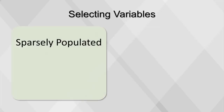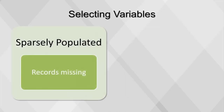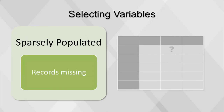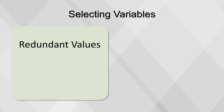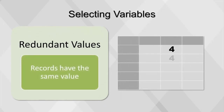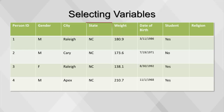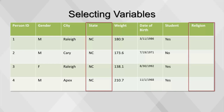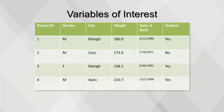Fields that are sparsely populated—meaning a high percentage of records is missing—should not be selected. Fields with redundant values, meaning a high percentage of records have the same value, should also not be selected. A visual inspection of the first few records can be used to identify these fields. From the example table, we can remove the state column because all its values are the same, and remove the religion column because it is sparsely populated.